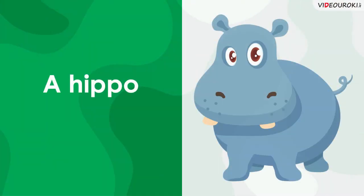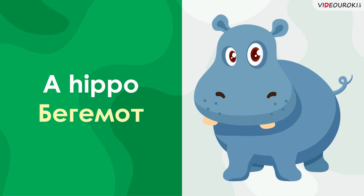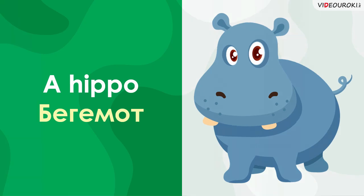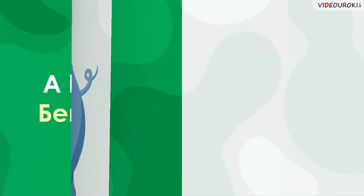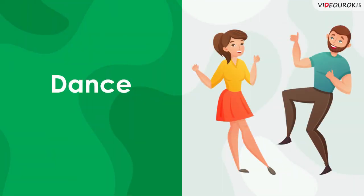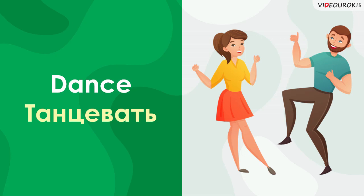A hippo — бегемот. Listen and repeat: a hippo, a hippo. Dance — танцевать. Listen and repeat: dance, dance.